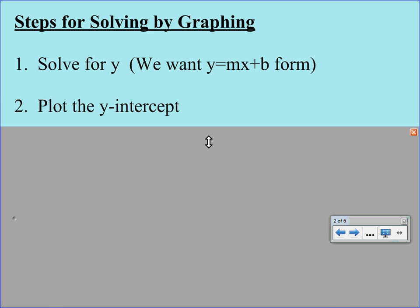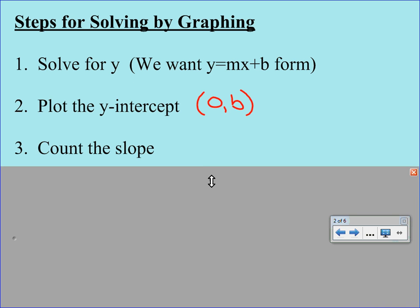Step two is to plot the y-intercept. Remember that that is just going to be the coordinate zero b, and that b number is going to come right from the equation. Step three is starting from the y-intercept, so make sure you're starting at that point that you just plotted. You're going to count the slope, and that remember is just the rise over the run.